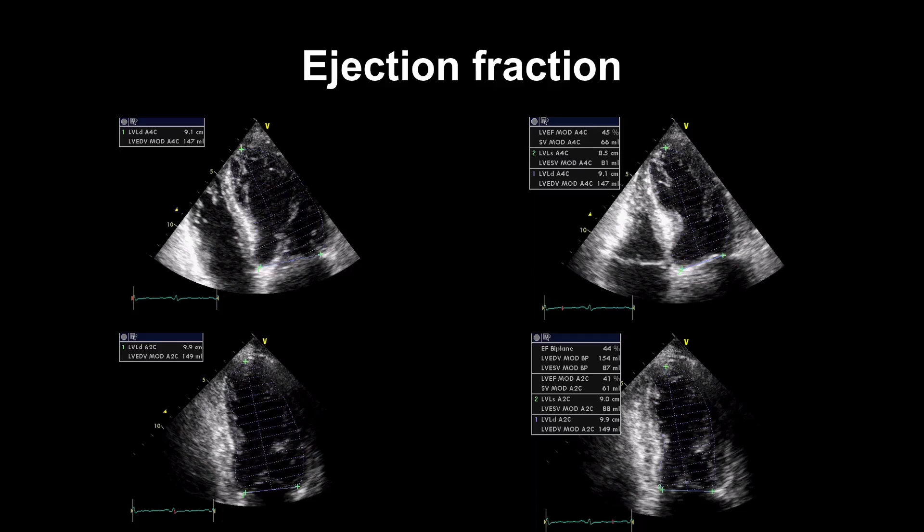So we can use Simpson's method, like we've got here, or we can use 3D. Or we may eyeball it and give an estimate. Ejection fraction is popular, but it's controversial. Not all departments use it, and those that do should quality assure their work against an independent standard.